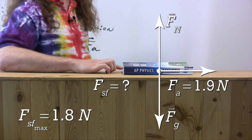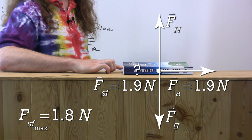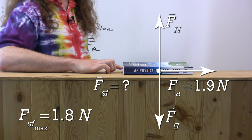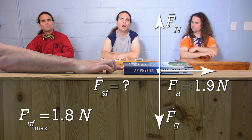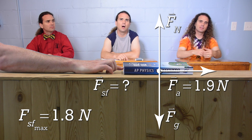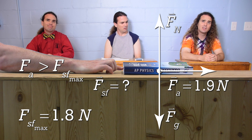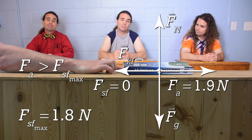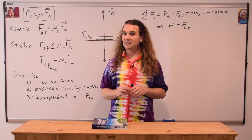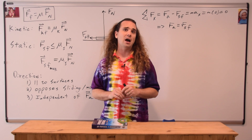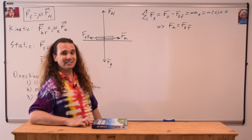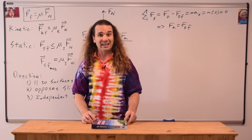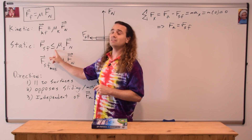If a force of 1.9 newtons is applied — which exceeds the maximum static friction of 1.8 newtons — the book begins to move and friction switches from static to kinetic. There is no longer a force of static friction; only kinetic friction acts. This is exactly what the less-than-or-equal-to sign in the static friction equation means: static friction increases and decreases in an attempt to prevent the object from moving.